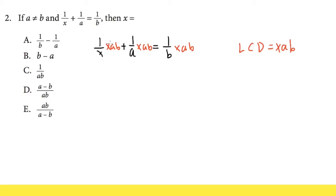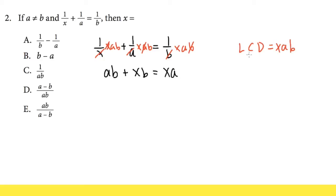What good does this do? For the first term, x and x cancel out, so we just have 1 times a times b, that's a·b. For the second term, a and a cancel out, and we have 1 times x times b, which is x·b. On the right-hand side, b and b cancel, and we have 1 times x times a, which is x·a. So whenever we have an equation with fractions, find the lowest common denominator and multiply through — we end up with an equation with no fractions. That's the strategy.